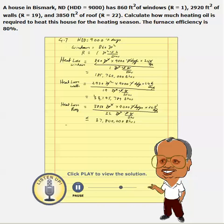So the total heat loss is the sum of all three. When you add these up, you get 256,755,789 BTUs.